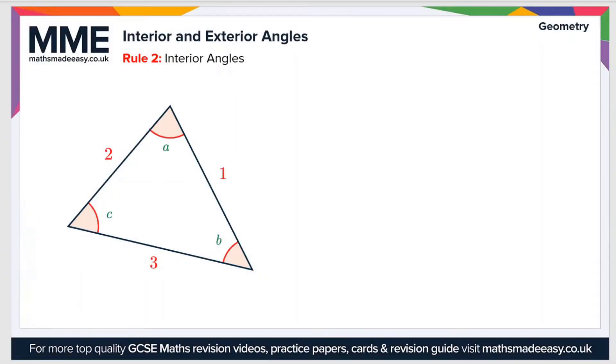Moving on to the second rule now, and that is the interior angles. So the rule here is that the sum of the interior angles equals n minus 2 times 180 degrees.